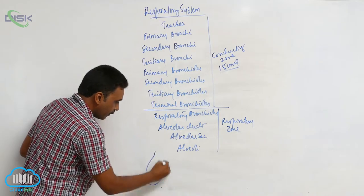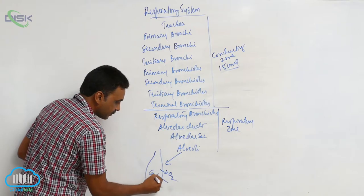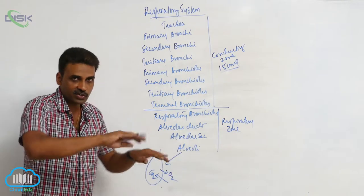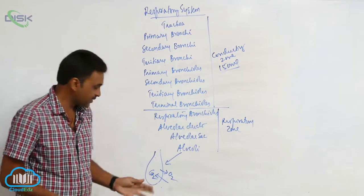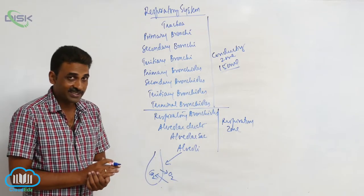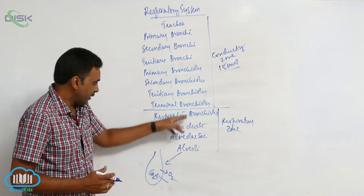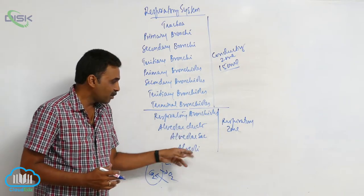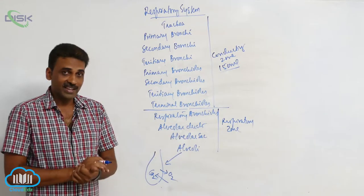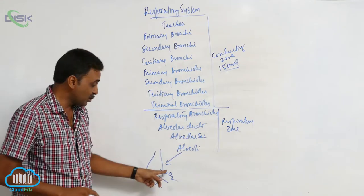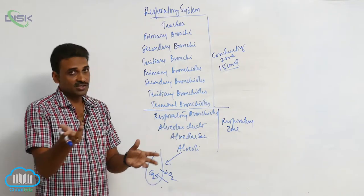Normally, we know it is the alveoli where exchange of gases occurs. Alveoli are sac-like structures. We discussed that around 70 crore alveoli are present in both lungs. That is the place where exchange of gases occurs. But respiratory bronchioles, alveolar ducts, and alveolar sacs also have exchange of gases, though that exchange is not as high as you see in alveoli.